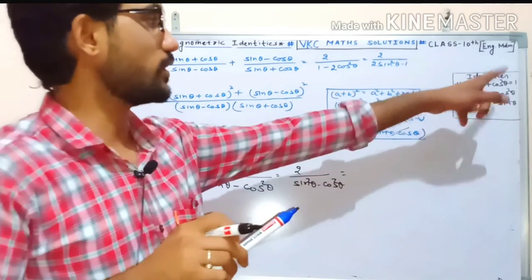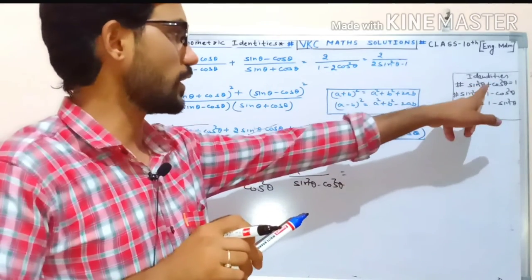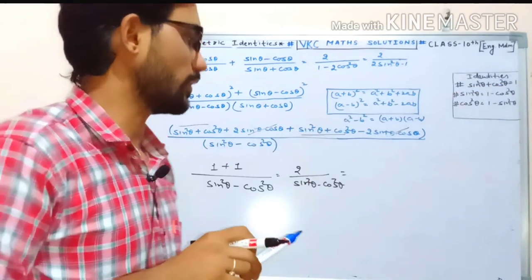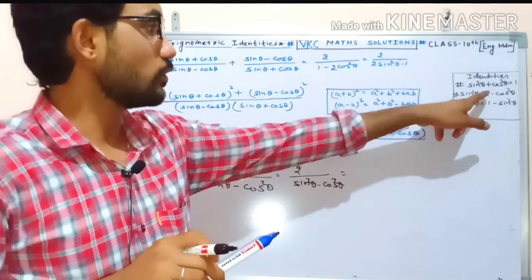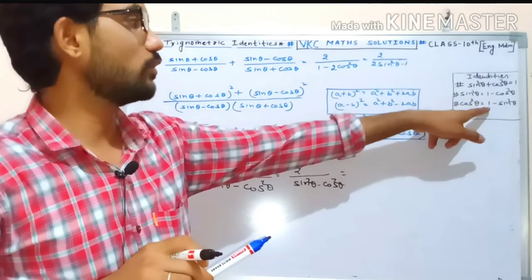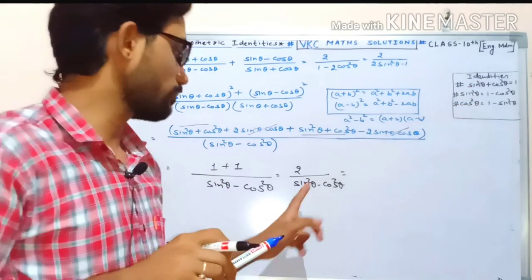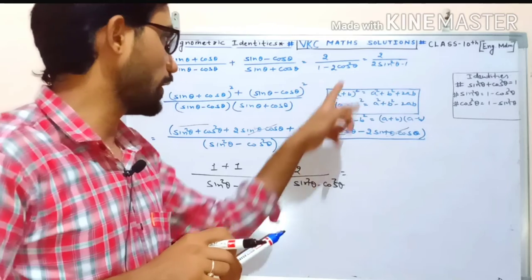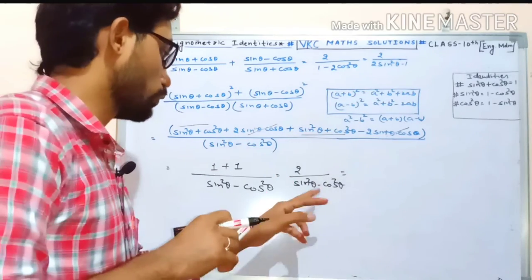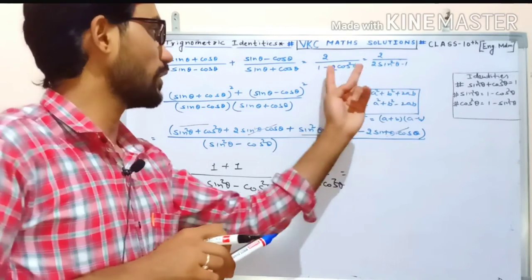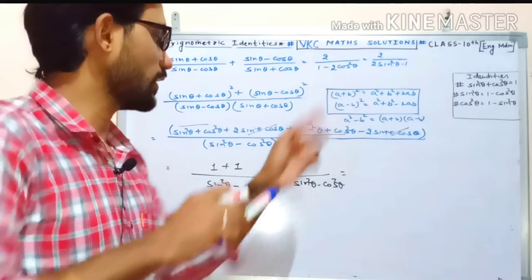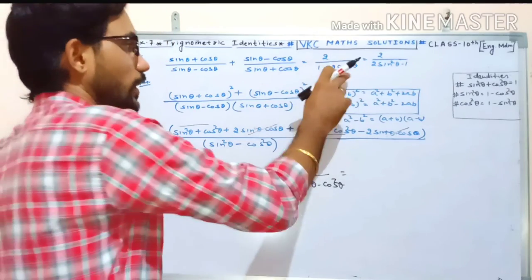The first identity sin²θ + cos²θ = 1 is applied. The answer simplifies to two separate parts involving cos and sin, giving a result of 2 over (sin²θ − cos²θ).